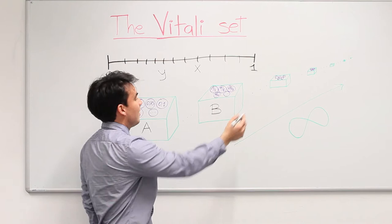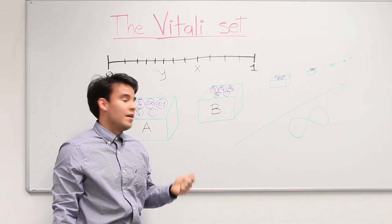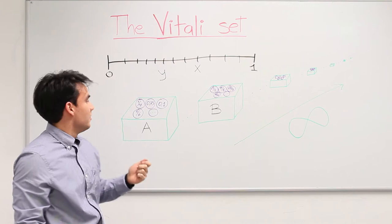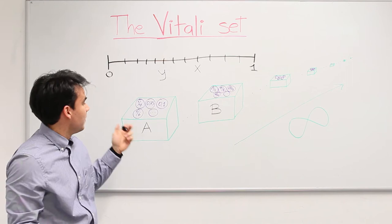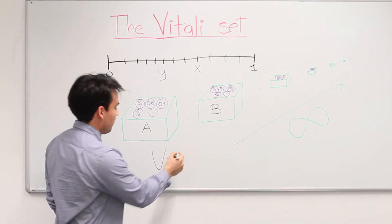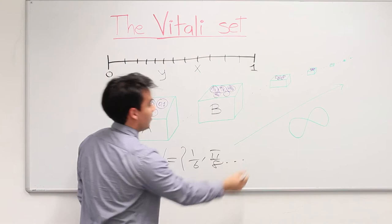So now, in order to create a Vitali set, we will use the axiom of choice, which basically picks up from each box a random element. This new set, called V, has, for example, now 1 over 6, pi over 8, and so on. And so, we have created a new set V, which is non-measurable. But it's still not clear why it's non-measurable.